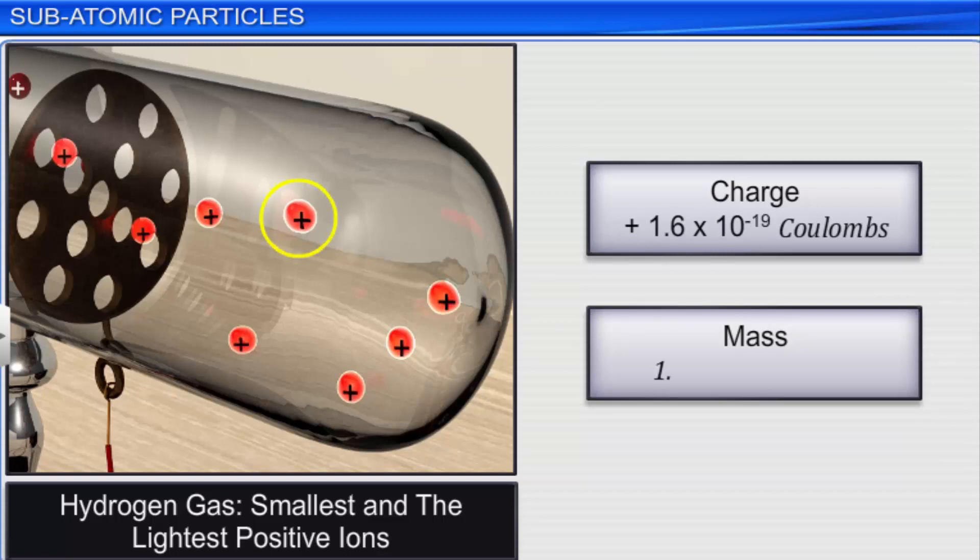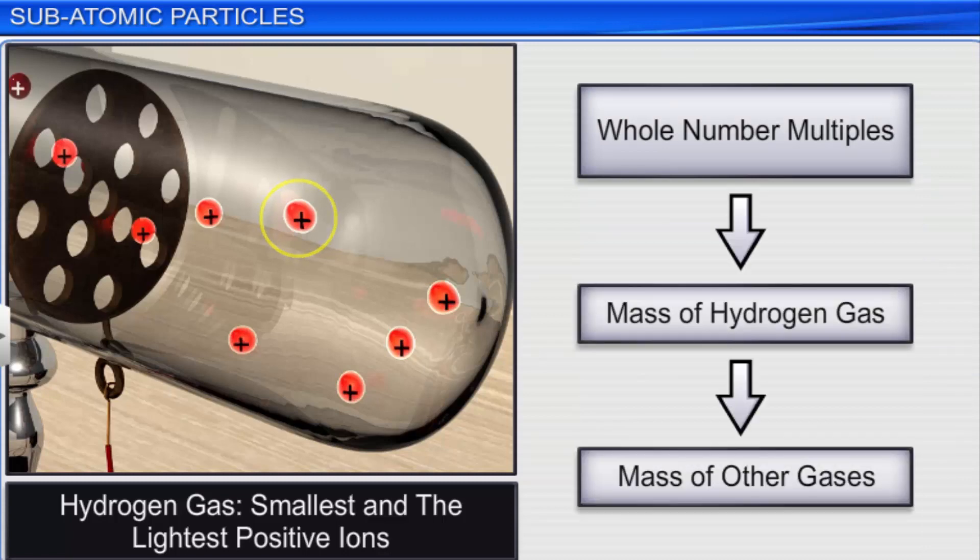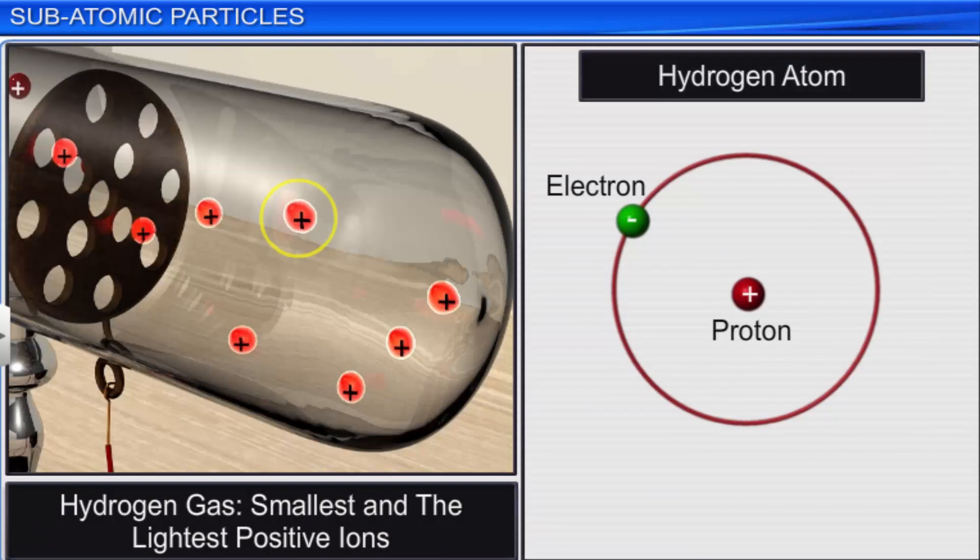The mass of the positive particles originating from other gases in the discharge tube was found to be whole number multiples of the mass of those originating from hydrogen gas. Therefore, the positive particles from hydrogen gas carrying one positive charge and mass equivalent to a hydrogen atom were taken as the fundamental particles of any atom and were named as protons.